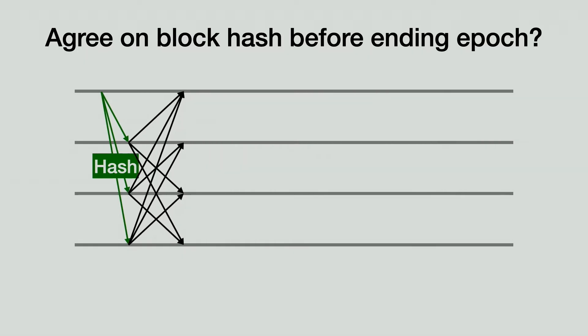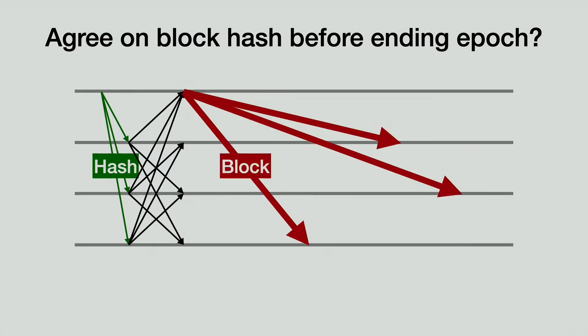In the agreement phase, the nodes agree that they are going to append a block with that hash to the log. Then each node can go and download the corresponding block independently. Nodes with low bandwidths will still spend a long time downloading, but they will not block the fast nodes. On the other hand, the fast nodes can append the block as soon as they download it because they know the slow nodes have agreed to append the block with that hash, so the resulting log will be consistent.